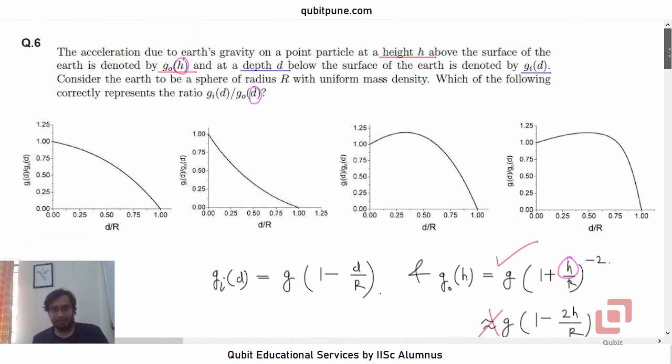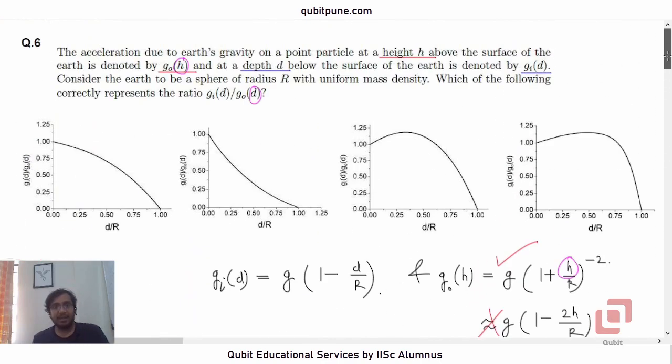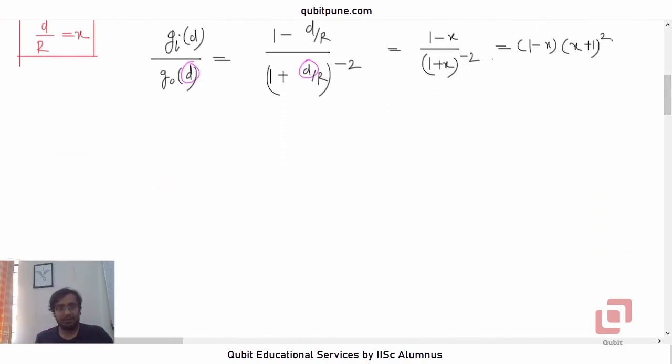So now we get a cubic polynomial. We will now get a cubic polynomial when we expand this, and we can identify which one of the four curves here correctly represents the variation by calculus. Let us call our function as f(x). It will be X plus 1 the whole square into 1 minus X.